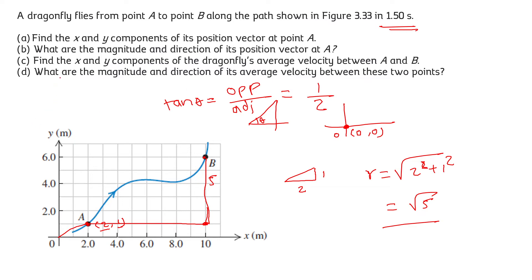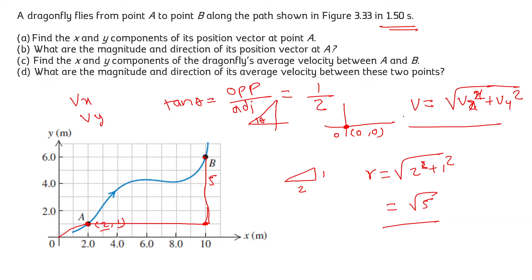From here, we can find the x and y components of the dragonfly's average velocity. After that, we are going to find the magnitude and direction of its average velocity. In order to find the magnitude, we must know the x component and the y component of velocity, which gives us the magnitude as the square root of Vx² plus Vy². To find the value of theta, we use the formula tan theta equals opposite side upon adjacent side.